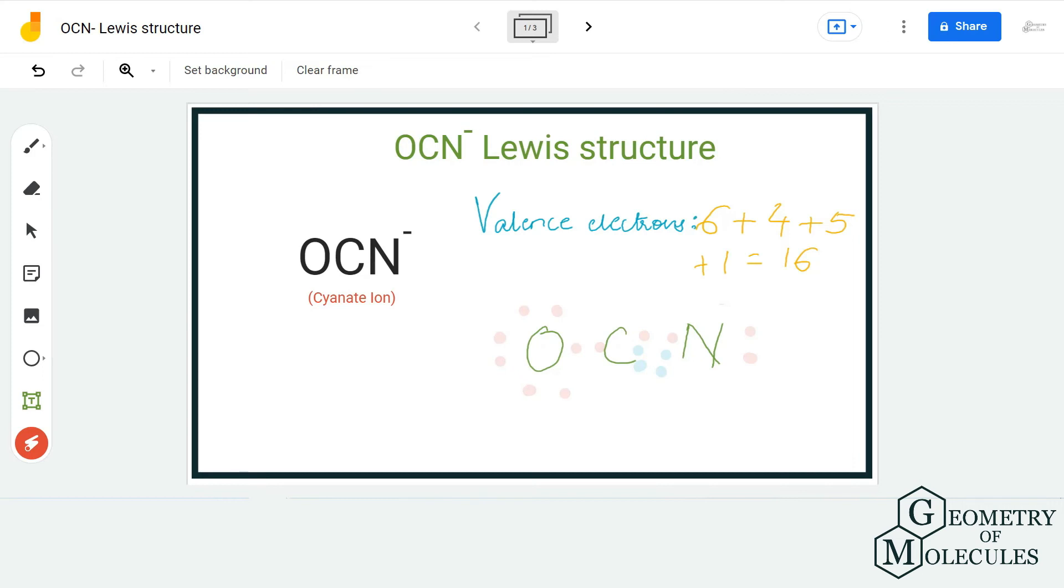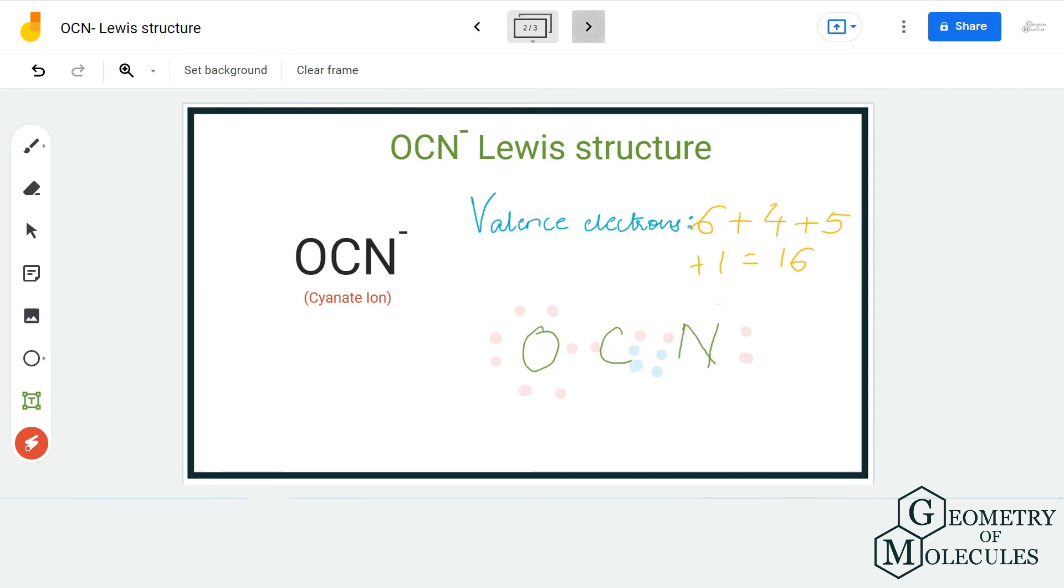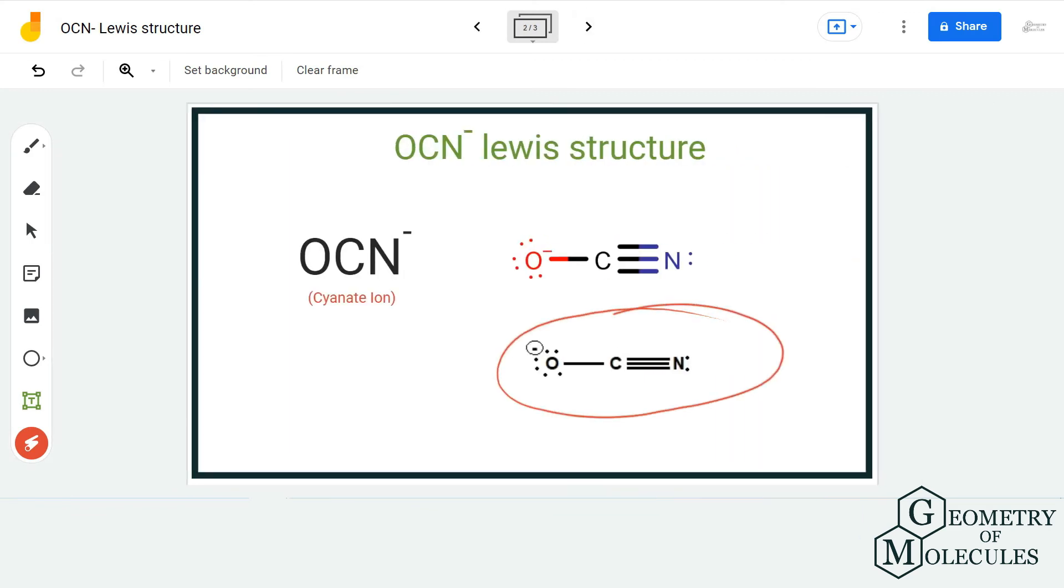Once we run out of electrons from here, we can take from oxygen, but as you can see that carbon already has 8 valence electrons, we do not need to shift a pair of electrons from oxygen atom. So this is the OCN⁻ Lewis structure in which carbon forms a triple bond with nitrogen atom and a single bond with oxygen atom.